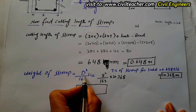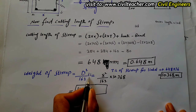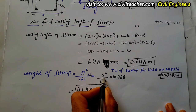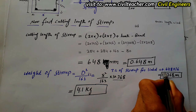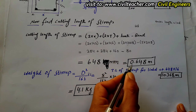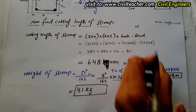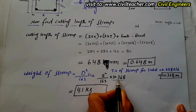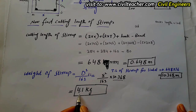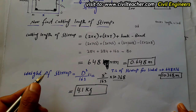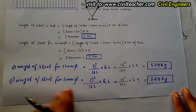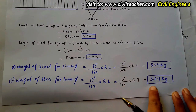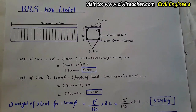Now the weight of the stirrup steel: D² ÷ 162 × running length. The total running length is 0.648 m × 16 stirrups = 10.368 meters. So: 8² ÷ 162 × 10.368 = 4.1 kg. This is the total weight of steel for the stirrups.